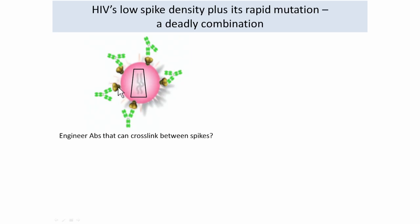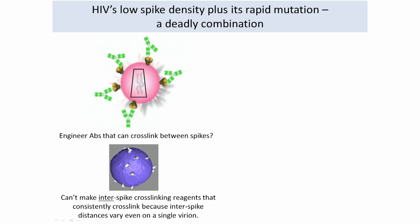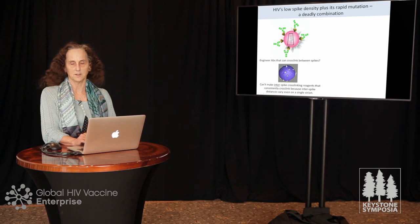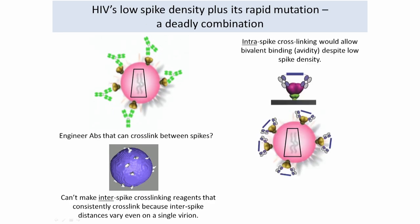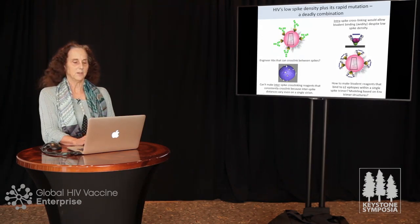We wanted to figure out if we could develop reagents to overcome this. Could we engineer antibodies that cross-link between spikes? We can't do that consistently because even on a single virion, spikes are distributed at different distances. So instead we thought about what we call intra-spike cross-linking — binding to two adjacent subunits of the spike trimer within a single spike, allowing bivalent binding despite the low spike density.